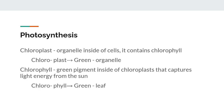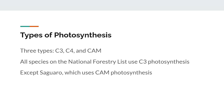There are three main types of photosynthesis: C3, C4, and CAM, and they differ in how they deal with the process of photorespiration. Almost all trees and all species on the national forestry list use C3 photosynthesis, with the exception of the saguaro cactus, which uses CAM photosynthesis. I will leave a link in the description to more resources about the differences between the types of photosynthesis if you are interested.